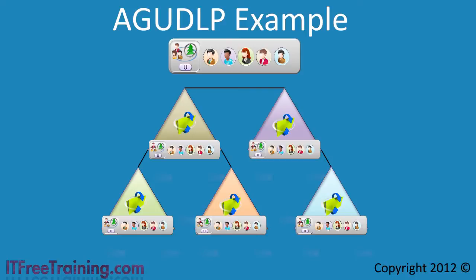The next problem to consider is replication. Universal groups are replicated using the global catalog server. This means that the smallest change will require the group to be replicated to all domain controllers in every domain. Even though replication has improved in newer versions of Active Directory for universal groups, in a large environment you will want to minimize replication.